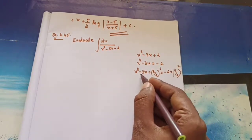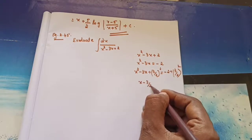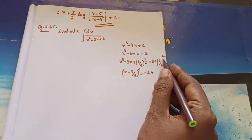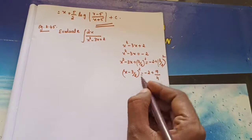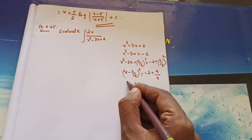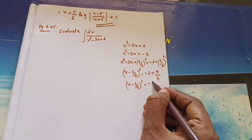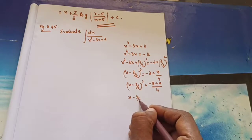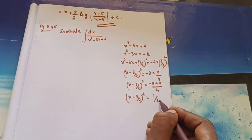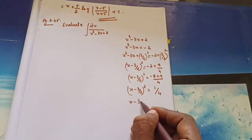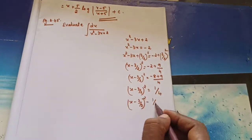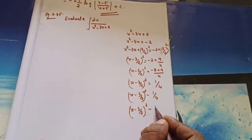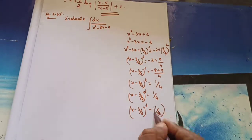So (x minus 3/2)² equals minus 2 plus 9/4. Simplifying: minus 8/4 plus 9/4 gives 1/4. So (x minus 3/2)² equals 1/4. Bring 1/4 to this side: (x minus 3/2)² minus (1/2)² equals zero. So the denominator becomes (x minus 3/2)² minus (1/2)².